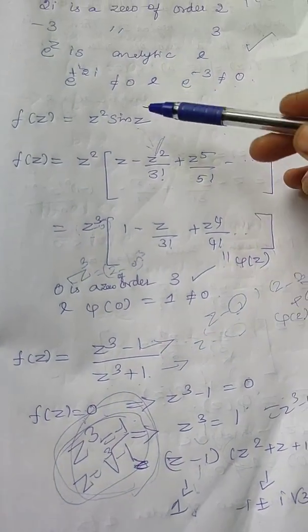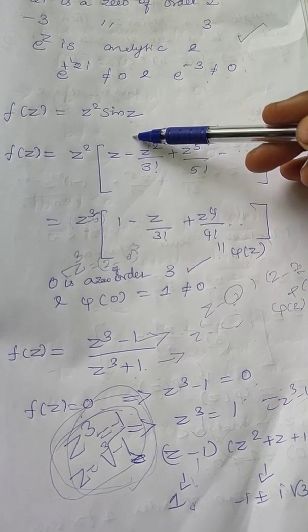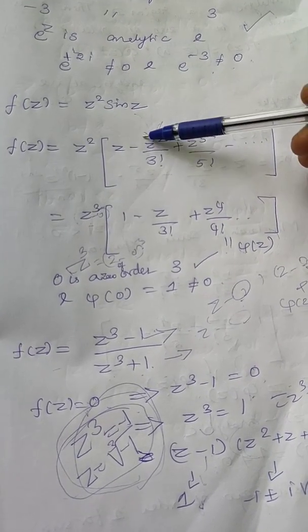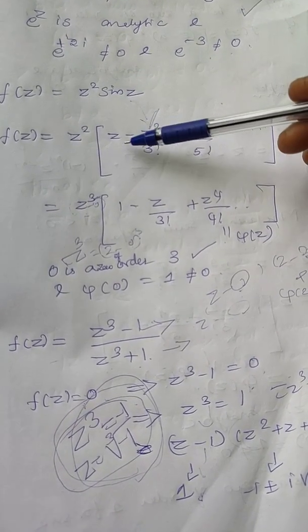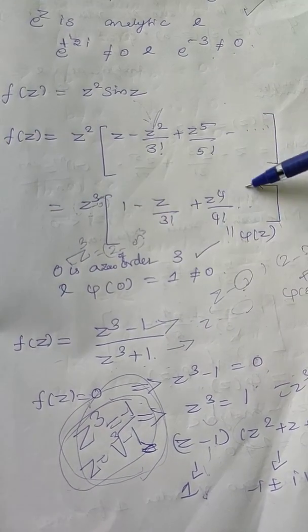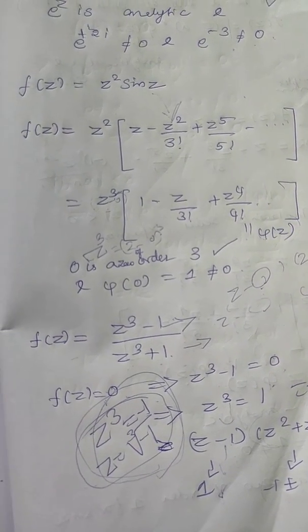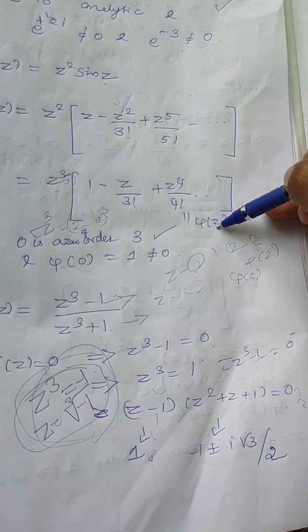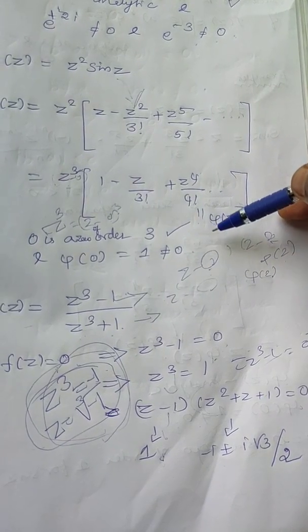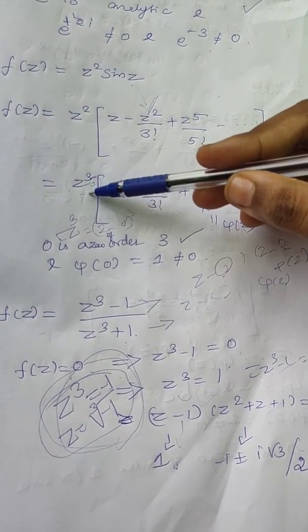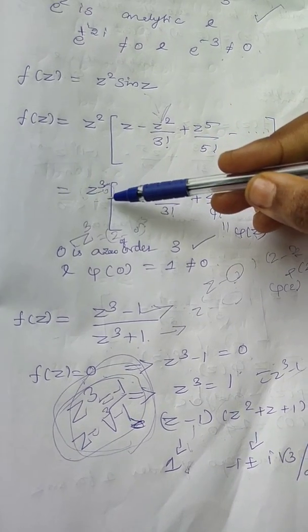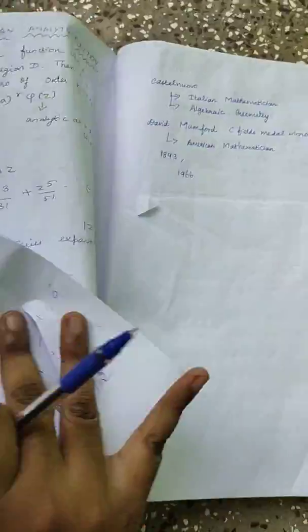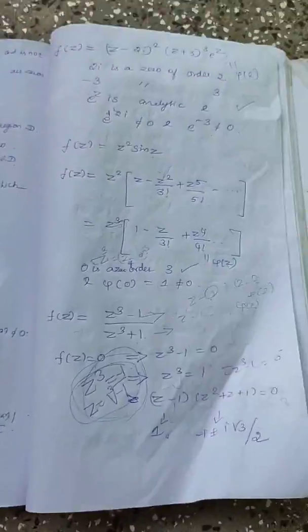And consider this example. This is so similar to the first example that we have done. Here I consider the function to be Z square sine Z. I express this term in terms of Maclaurin series. I have taken Z outside. So Z cube multiplied by this term. As we discussed already. Here this function, that is Phi of 0 is equal to 1, that is not equal to 0 and that is analytic also. And Z cube is nothing but Z minus 0 to the whole cube. Here 0 is a zero of F of Z of order 3. There we had order 1. So here it is order 3.